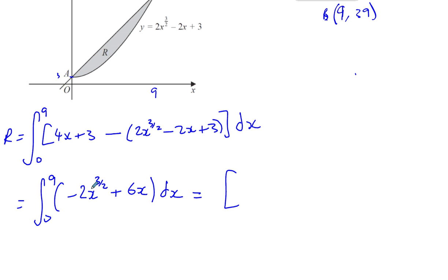So remember we add 1 to the power and divide by the new power. So you have minus 2x to the power of... Now if you add 1 to the power it's adding 2 over 2 which gives you to the power of 5 over 2 divided by 5 over 2 plus... And you've got 6x squared divided by 2 and that's between the limits 0 and 9.